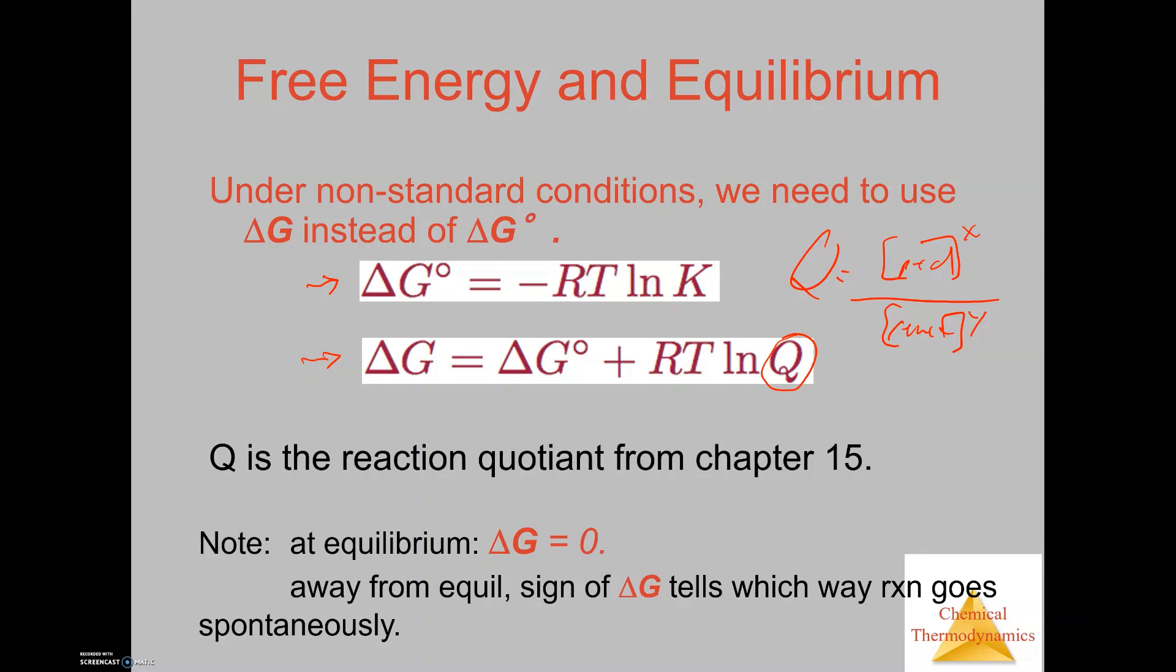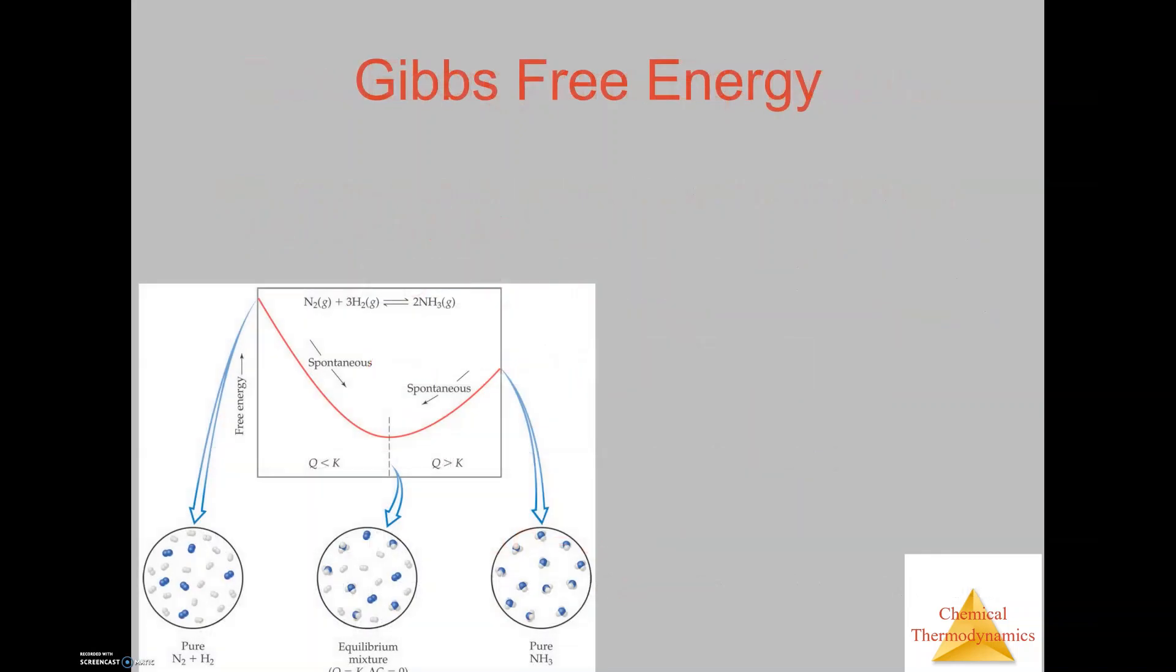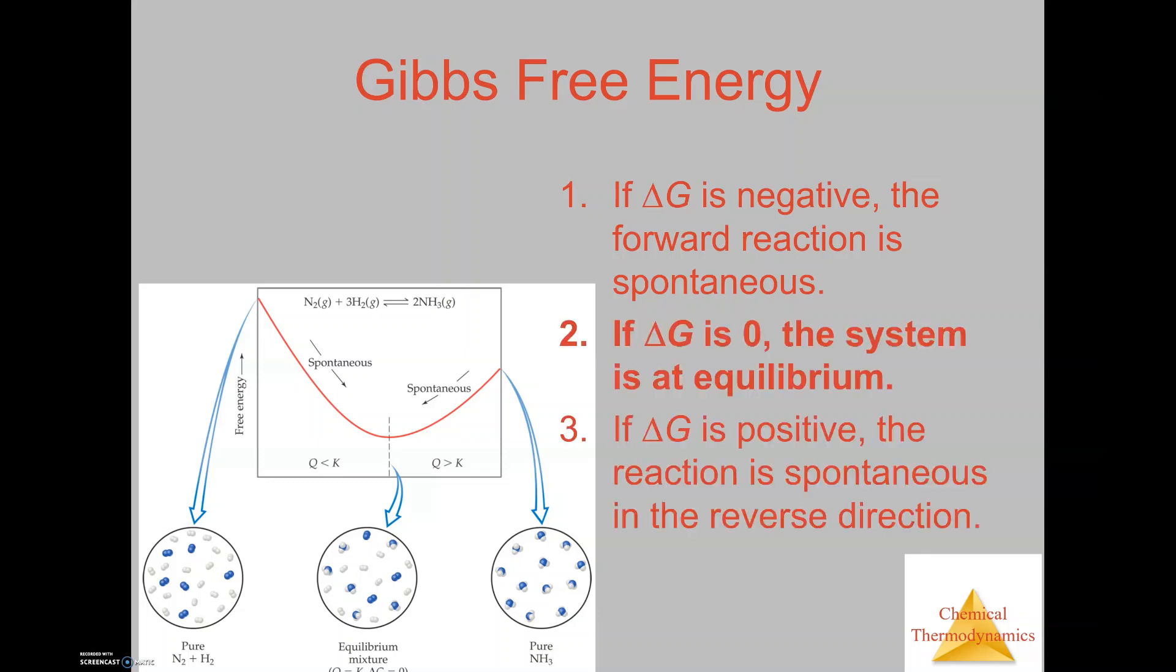Just a couple notes here. At equilibrium, Delta G is going to be equal to zero. If you are away from the equilibrium, if you're on the right-hand side or the left-hand side, the sign of Delta G is going to tell you which way the reaction is going to go spontaneously.